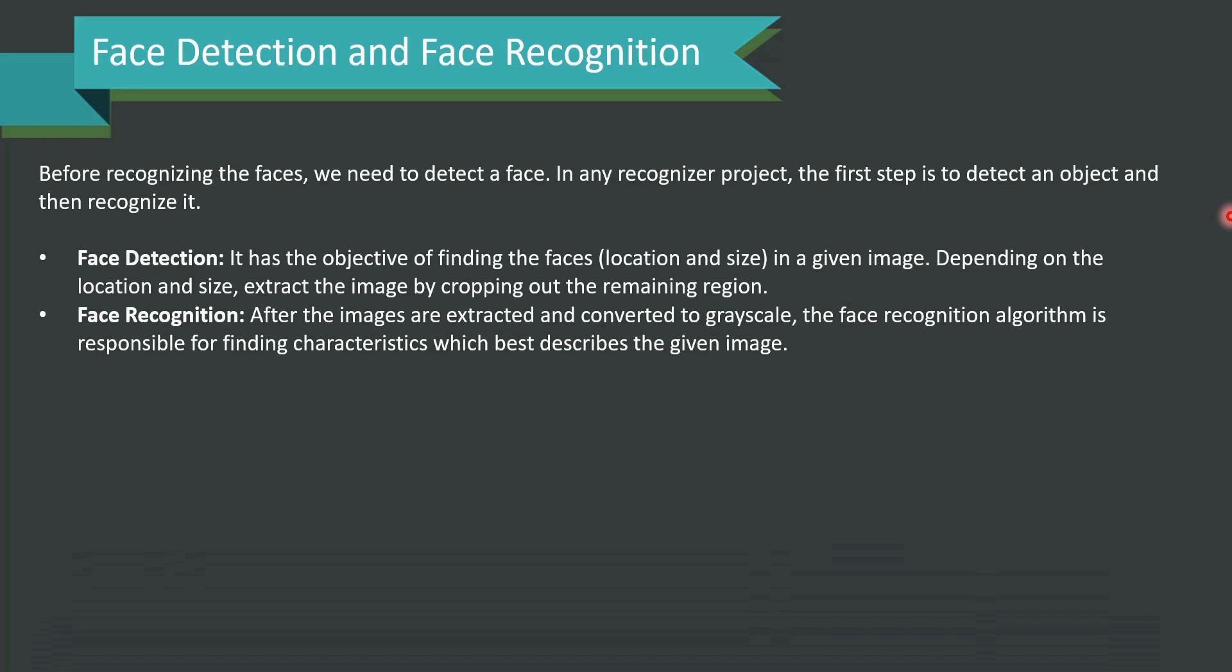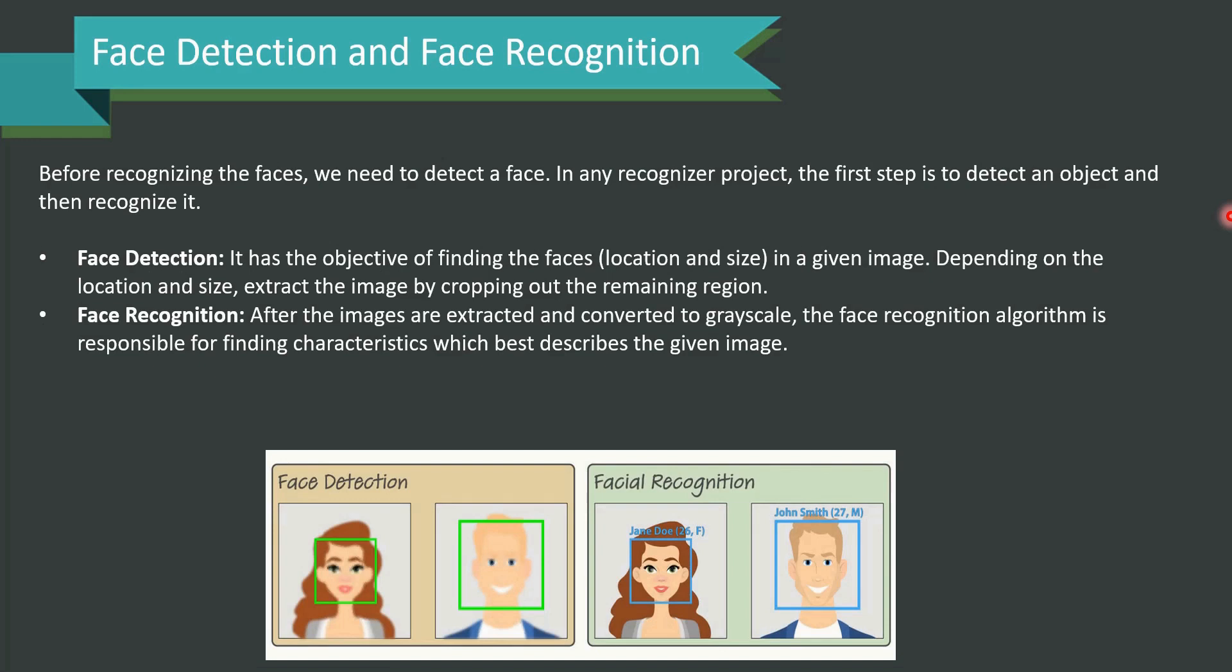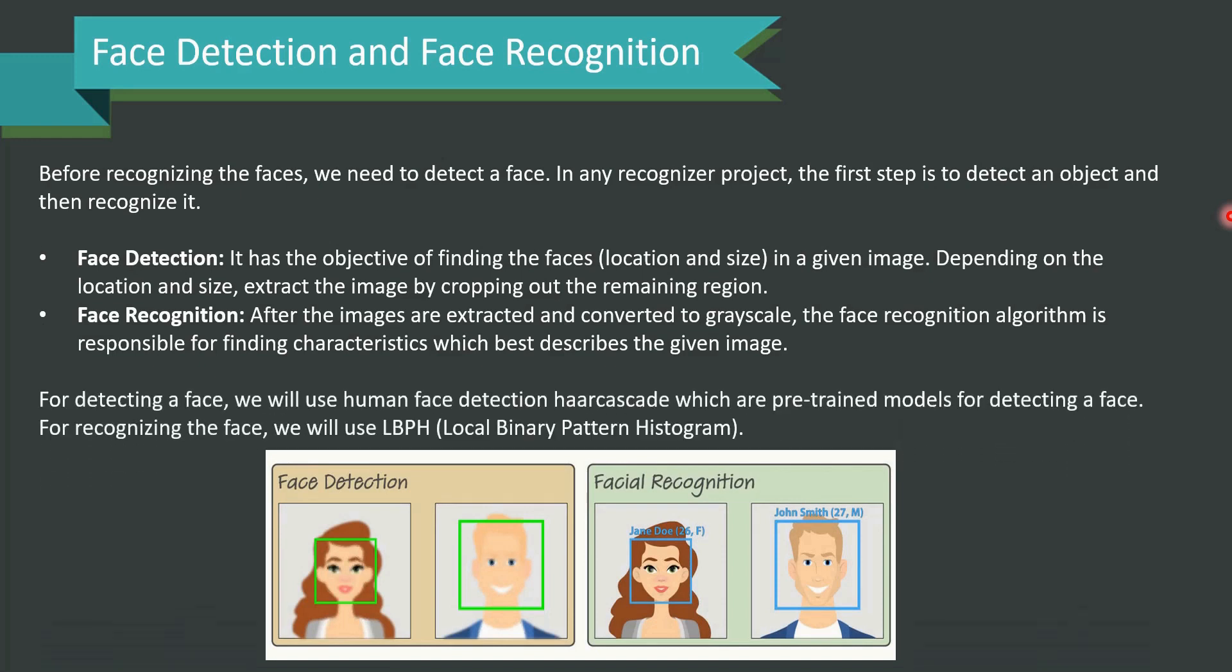Let's understand what is face recognition. After the images are extracted and converted to grayscale, the face recognition algorithm is responsible for finding the characteristics which best describes the given image. For detecting a face, we will use Human Face Detection Haar Cascade which are pre-trained models for detecting a face. For recognizing a face, we will use LBPH Local Binary Pattern Histogram.